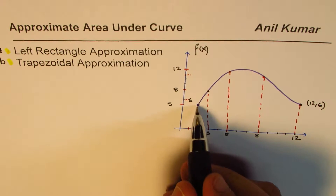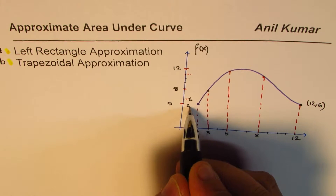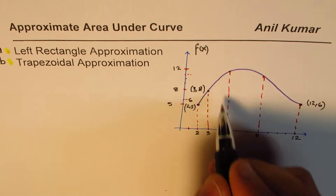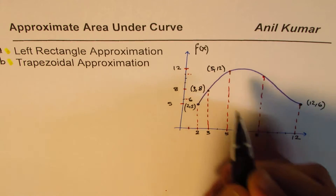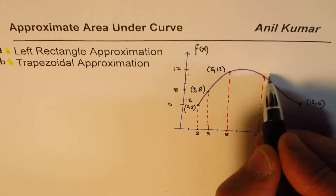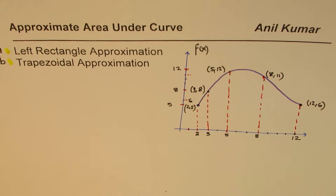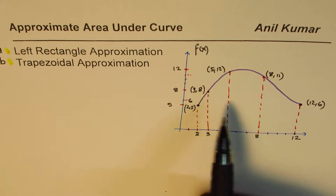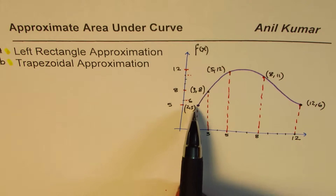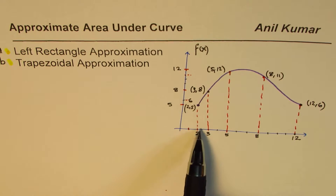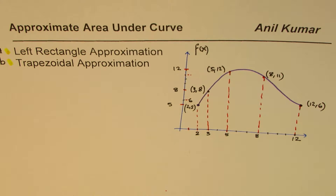The coordinate points are: (2, 5), (3, 8), (5, 12), (8, 11), and (12, 6). As you can clearly see, if we make rectangles, these rectangles are not of the same width. If you make trapezoids, even then these lengths are different. So that could be the case at times in a test paper. Let's use our methods of approximation.